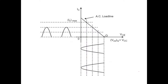Looking at the output characteristics of a BJT: the Y axis is the collector current IC and the X axis is the collector-emitter voltage VCE. An AC load line is drawn representing the amplifier working with respect to AC load, and the operating point Q is marked on this load line.